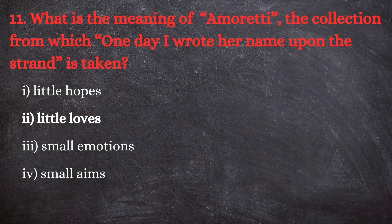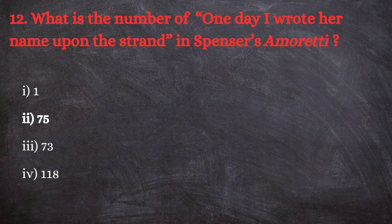Question number 12: what is the number of 'One day I wrote her name upon the strand' in Spenser's Amoretti? The options are: first, one; second, 75; third, 73; and fourth, 118. The correct answer is 75. 'One day I wrote her name upon the strand' appears as sonnet number 75 in Spenser's Amoretti, which is a collection of 88 sonnets.